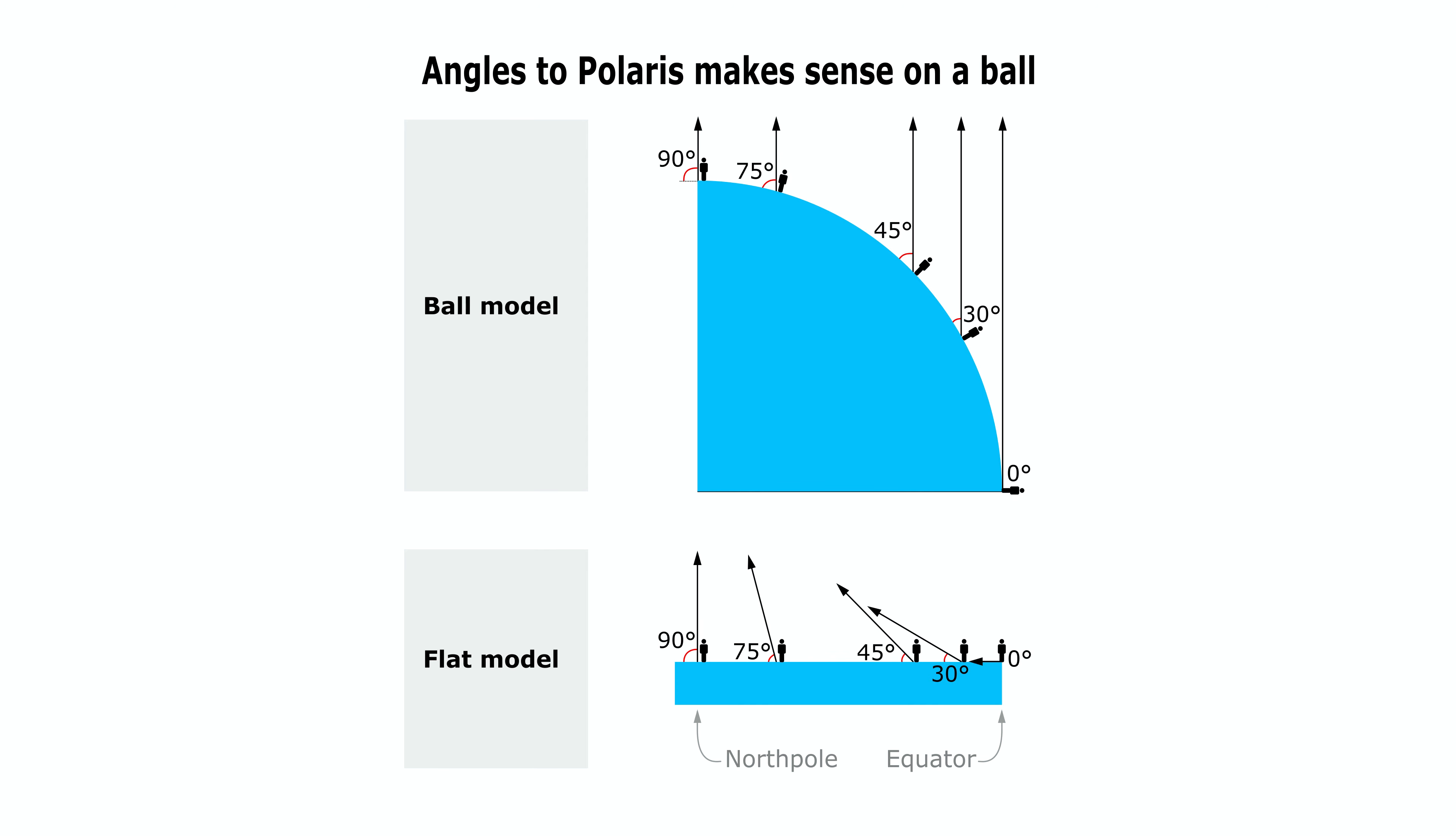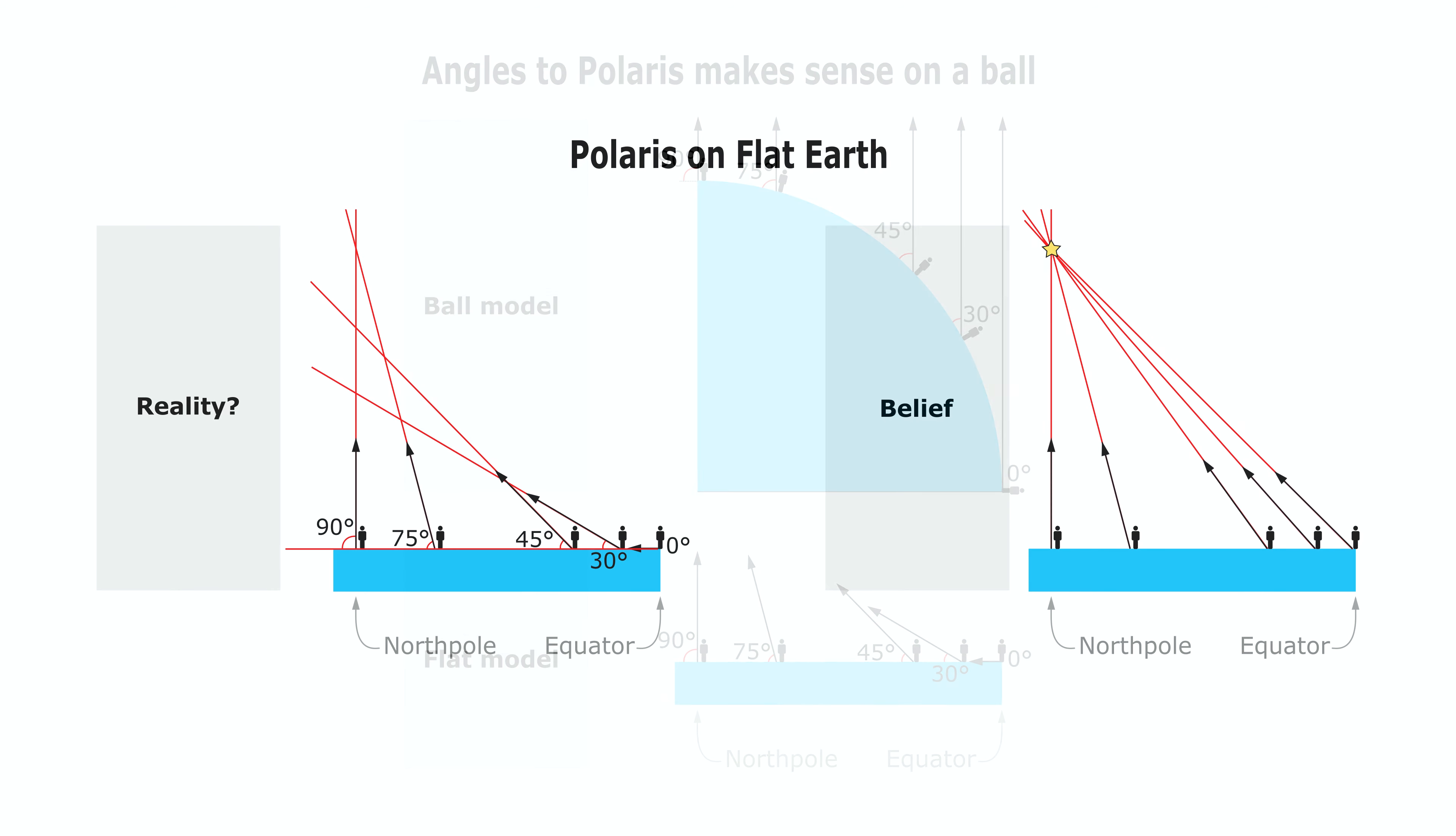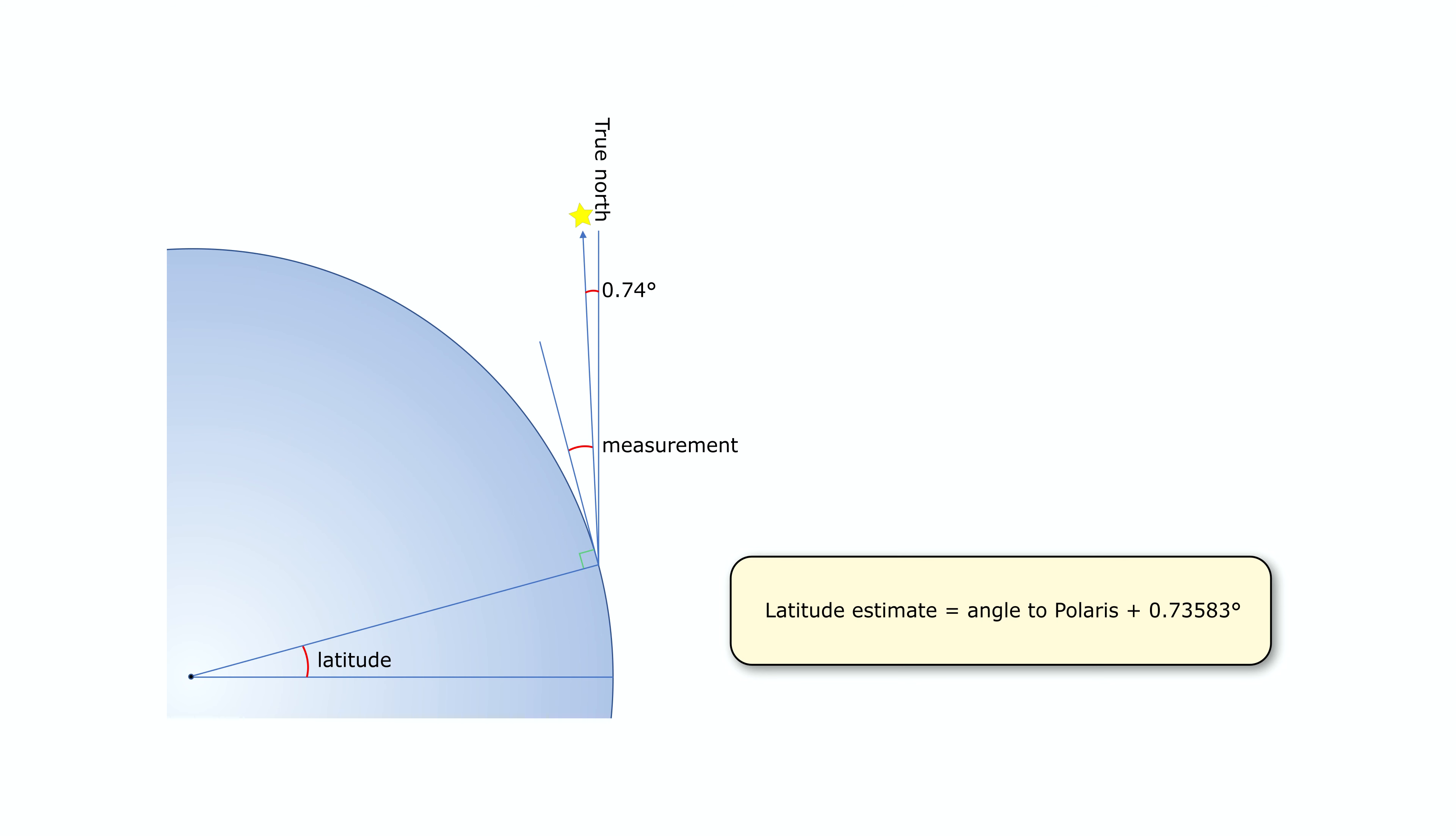We will soon know which is true. Okay, there is only one single point we need to know before I present my measurements. Remember I said Polaris is not exactly at true north. This means we need to add approximately 0.7 degrees to our measurements to get a more accurate latitude estimate.